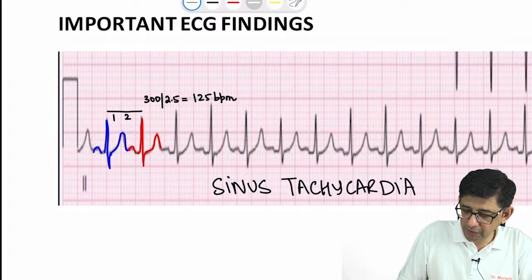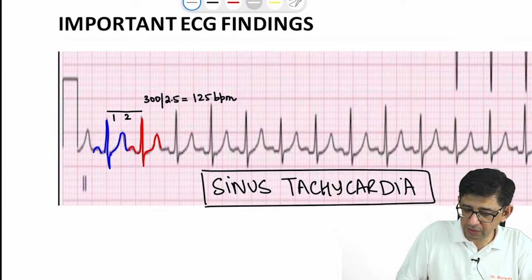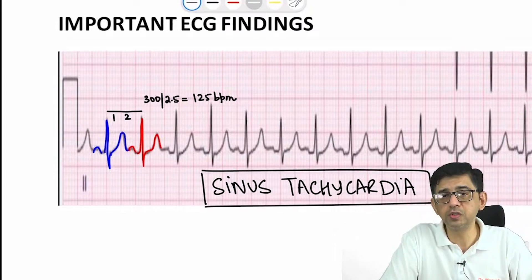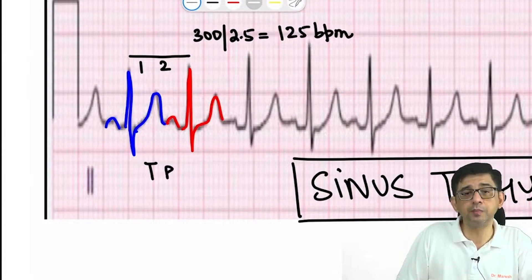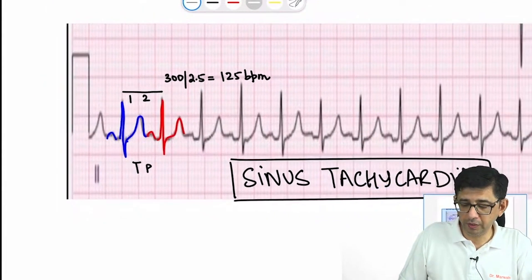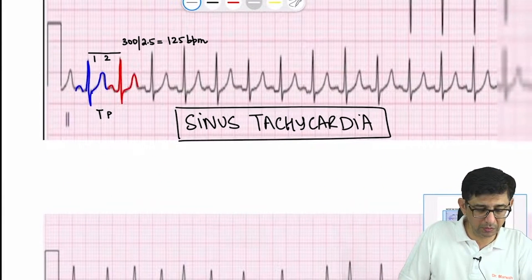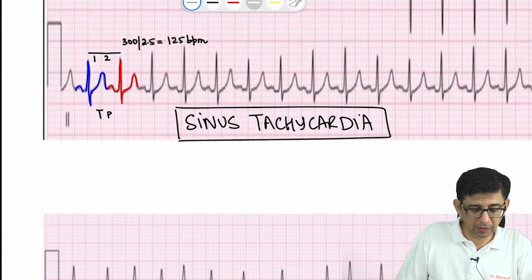This is not PSVT because in PSVT the T and P cannot be seen separately. The core thing is in this ECG, T and P are seen separately. If they were not seen separately, we could have thought in terms of PSVT.